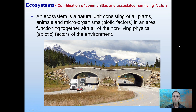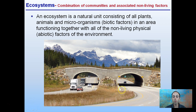Ecosystems are a combination of communities and associated non-living factors. An ecosystem is a natural unit consisting of all plants, animals, and microorganisms, including biotic factors, functioning together with their non-living physical or abiotic factors and environment. Here we see a highway passing through with an animal crossing passage to eliminate the need for animals to cross the road — this is a small version of an ecosystem, because we're taking into account both biotic factors (the animals) and abiotic factors (the physical layout of the land).